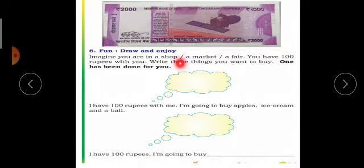If you have 100 rupees with me, I am going to buy apples, ice cream and a ball. You have to write here: ice cream, ball, apple. Like this, what you want to buy, write here. For example: